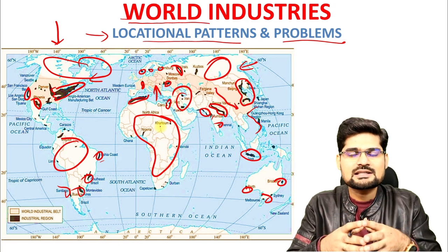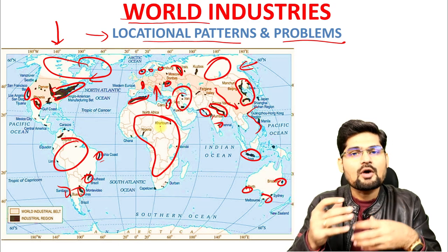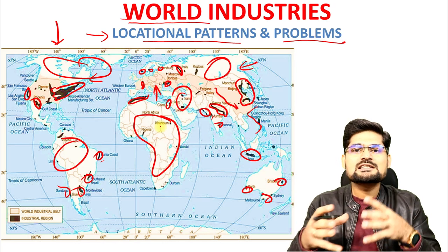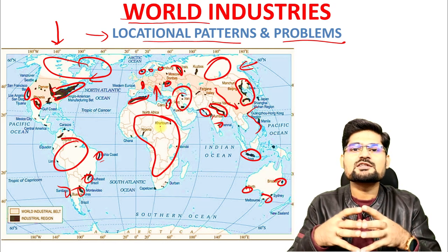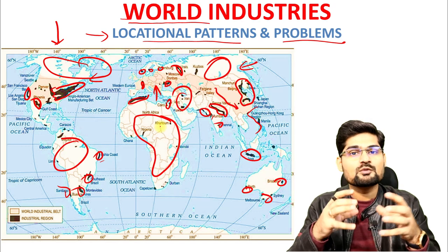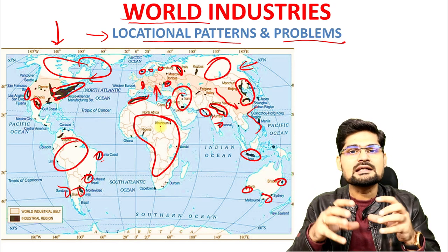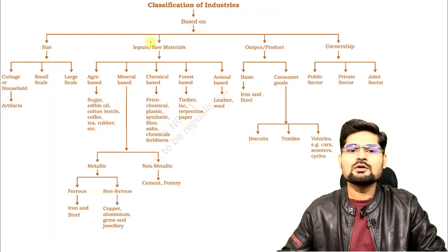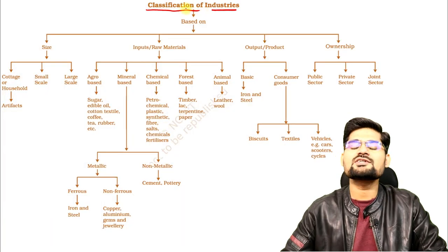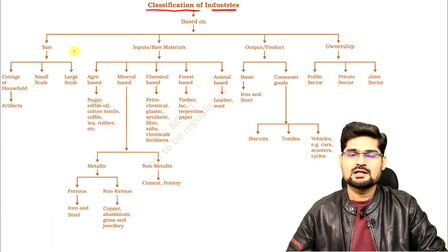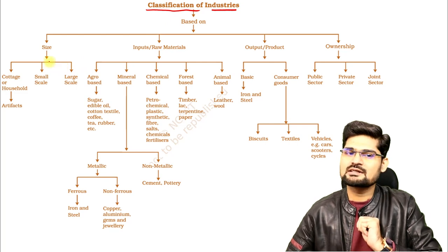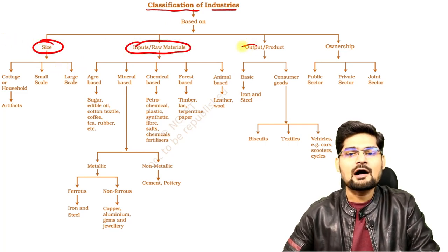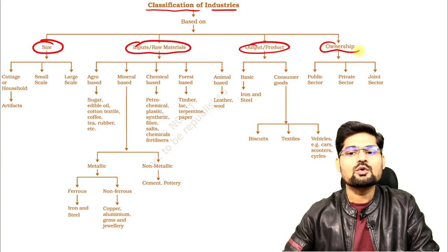In today's session, we are going to look into the problems of these industries and also examine areas where factors and modes of production have resulted in industrial hub creation across the world. Let's look into the first part: classification of industries. The bases of industrial classification are size, input of material, output of material, and ownership — four basic criteria to classify various kinds of industries.